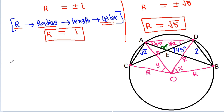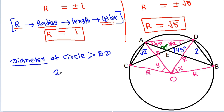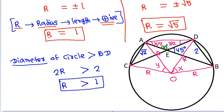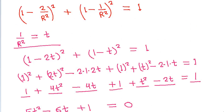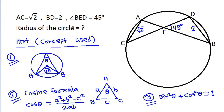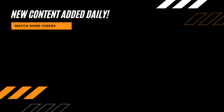The diameter of the circle must be greater than BD. Diameter = 2R must be greater than 2, so R must be greater than 1. Therefore R cannot equal 1, so R = √5. The radius is √5.